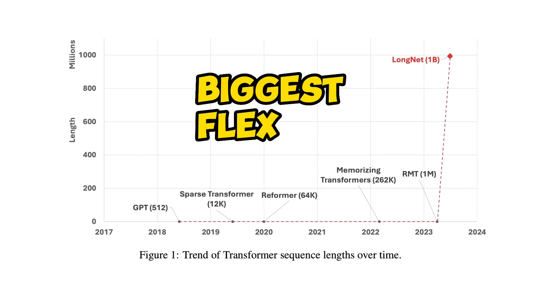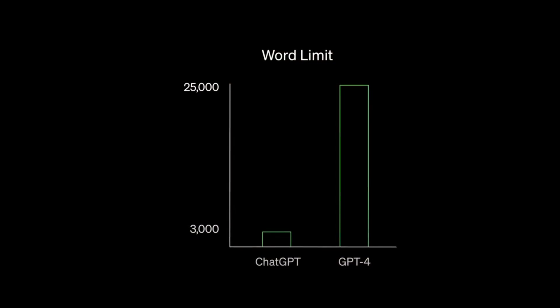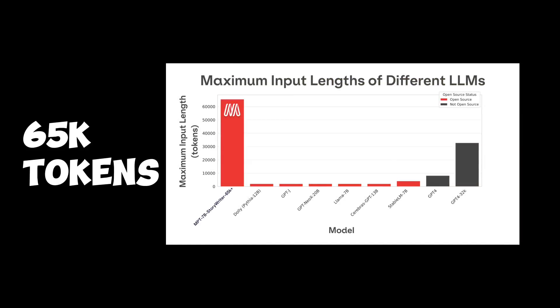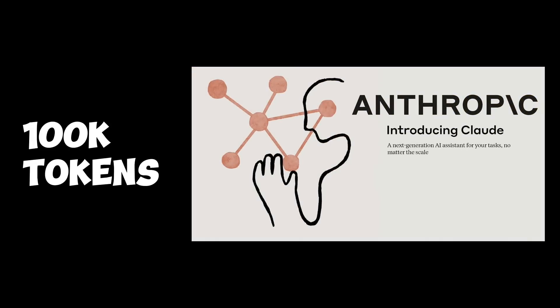This is probably the biggest flex I have seen in a research paper. One of the limiting factors of current large language models is the context window — the number of tokens it can work with. You've probably seen different models with different context windows. For example, GPT-4 has a version with 32,000 tokens, then there's the MPT story writer model with 65,000 tokens, and we also covered Claude's 100,000 context window.